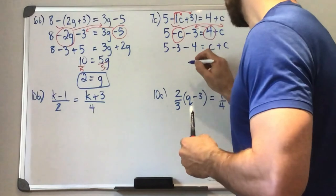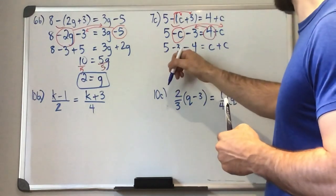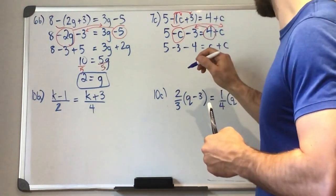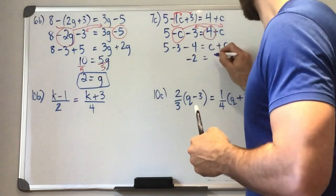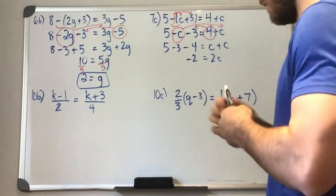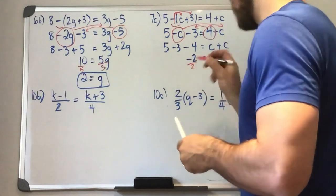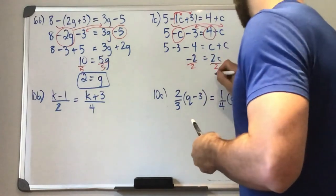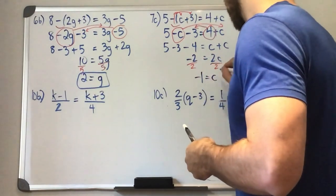We've got negative 6. What have we got here? 2. Oh, sorry, negative 2. Divide both sides by 2. And we've got C is equal to negative 1.